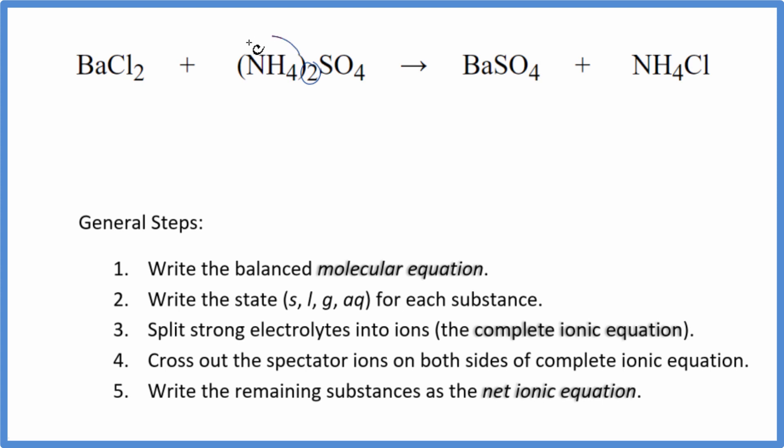I can see I have two of these ammonium ions here and just one here, so I'm going to put a two in front of the ammonium chloride. Now the ammonium ion is balanced. I have two chlorines on each side. That's good. One barium on each side and then a sulfate ion on each side. So this is the balanced molecular equation.